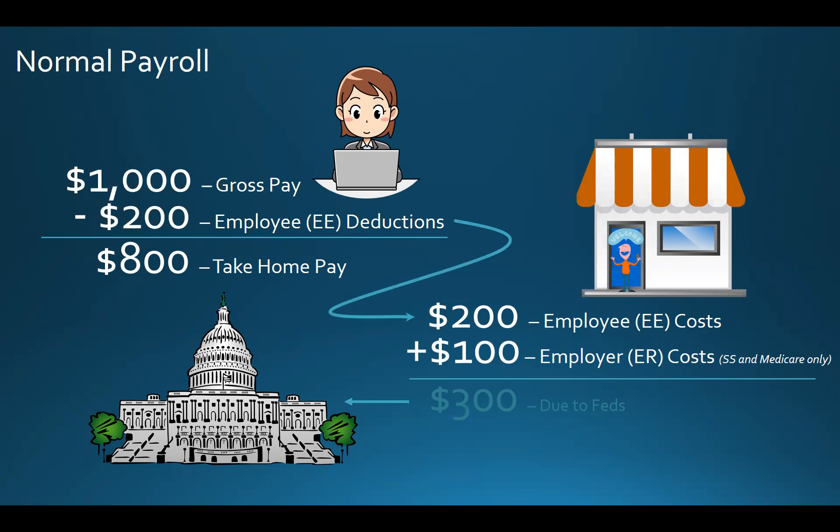So by the end of the pay period, they have $300 — my portion and their portion — of payroll taxes to submit to the federal government.